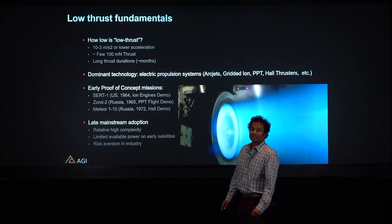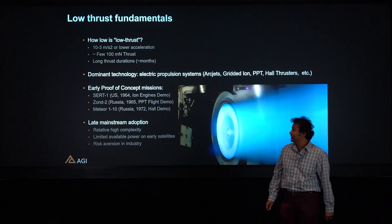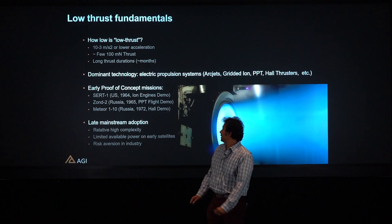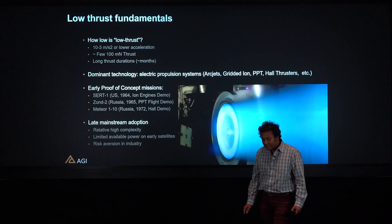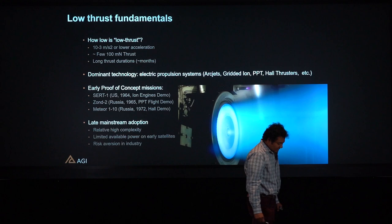Some fundamentals of Low-Thrust: what is Low-Thrust, and how low is Low-Thrust? Typically, the definition is about milli-g's or less — that's the typical acceleration. The thrust level is almost of the order of a few hundred milli-newtons, but not more. And Low-Thrust systems are typically characterized by long thrust duration — it could be of the order of months.